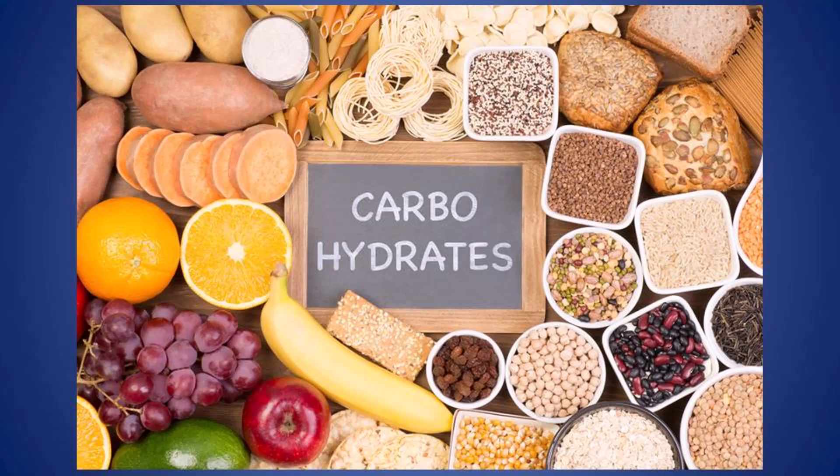We obtain carbohydrates from milk, fruit, jaggery, cane sugar, vegetables like potatoes and sweet potatoes, and cereals like wheat, maize, ragi, jowar, millet, and rice. We get 4 kilocalories of energy per gram of carbohydrate.